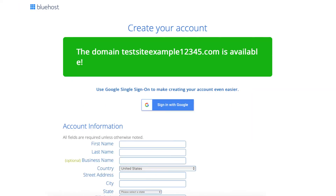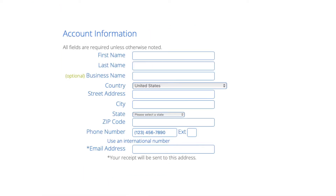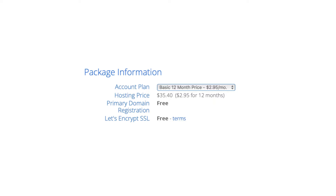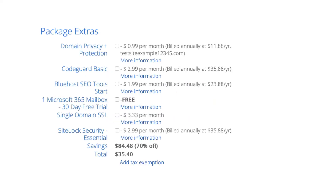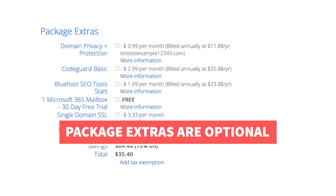You'll now be on the Create Your Account page. Input your account information. Next is the package information section — it'll have the Bluehost plan you chose with the term, the price, and you'll see domain registration free as well as the Let's Encrypt SSL certificate being free. Next is the Bluehost package extras section. What you see here can vary based on the plan you chose, as some plans come with some of these, or if you didn't choose a free domain name, domain privacy won't show.